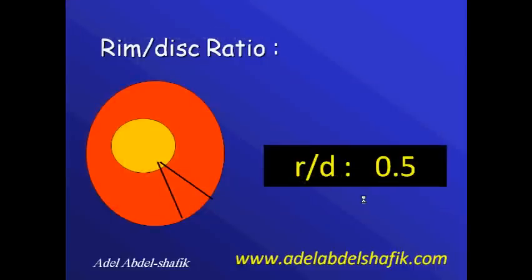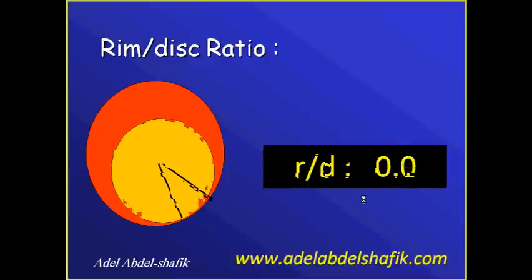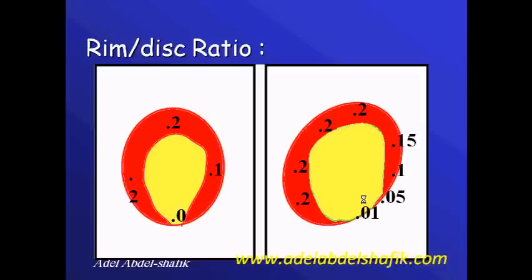In this area the rim disc ratio values are 0.5, 0.4, 0.2, 0.1, 0. We can make such a drawing — draw the neural rim all around — and you can choose certain locations and start to write the thickness of the neural rim at each segment.